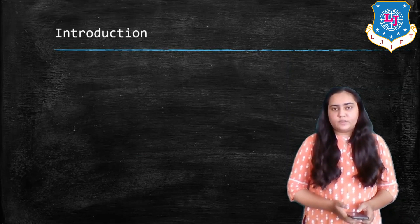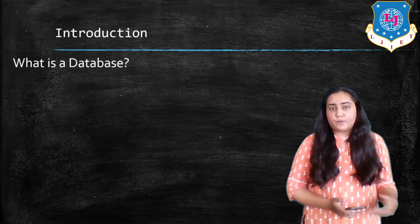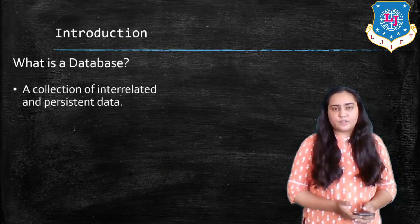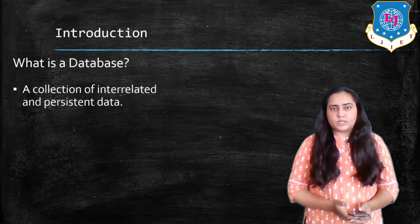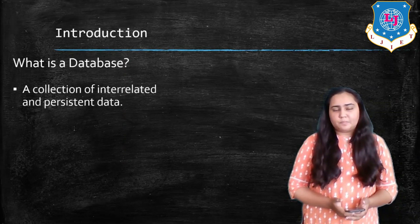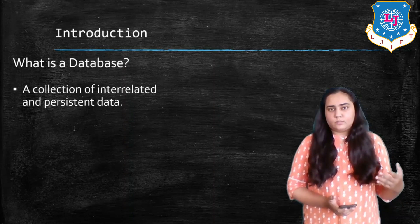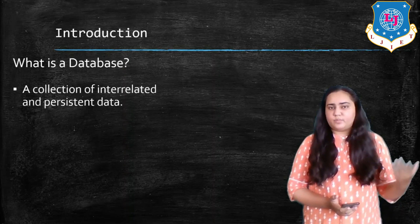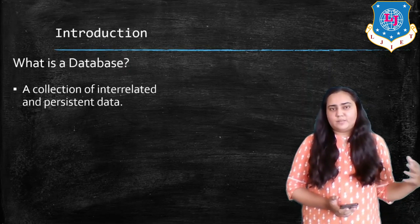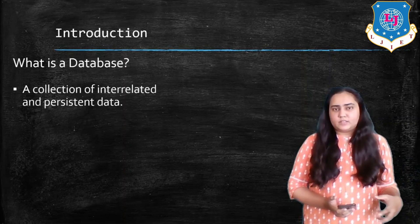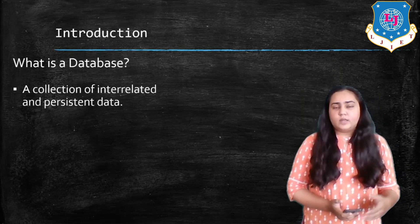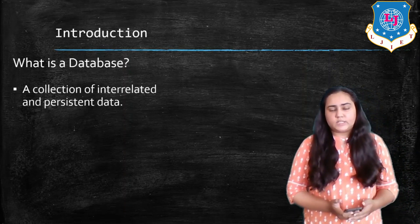First, I would like to begin with the definition of DBMS. For that, we need to first define what a database is. A database is a collection of interrelated and persistent data. The word interrelated means data that is related with each other. A database consists of a number of tables with columns and rows, but these tables are not just random tables — they are tables that are actually related with each other, and that is what makes a database.